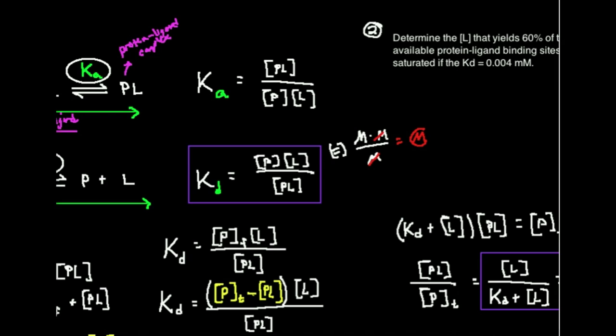If you think about what the units here should be, well notice that we have P times L divided by PL here. This is the reciprocal. It's PL divided by P times L. So you can prove it to yourself by writing M divided by M divided by M, but the units here you can tell are going to be inverse molar, or another way of writing this is 1 over molar.